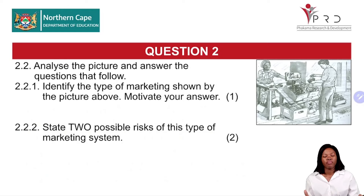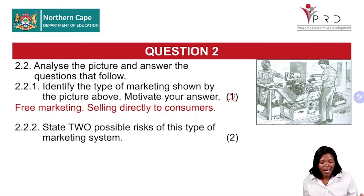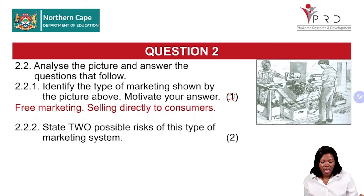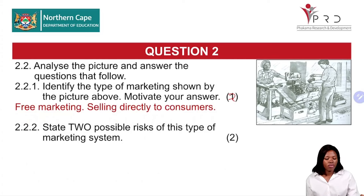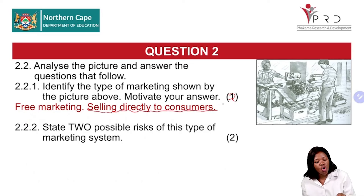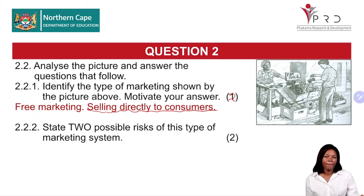Question 2.2: There will always be questions regarding marketing systems. Analyze the picture and answer the questions. Question 2.2.1: Identify the type of marketing shown by the picture and motivate your answer. The picture shows vegetables and fruits being sold directly to consumers, so the type of marketing is free marketing. It is free marketing because selling is directly to consumers with no middleman.